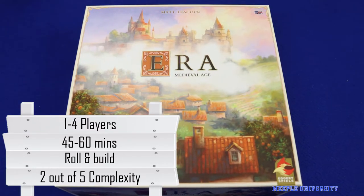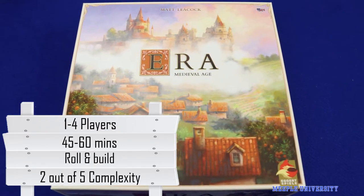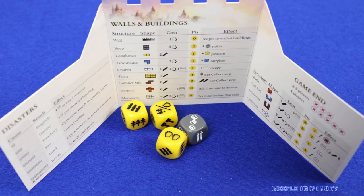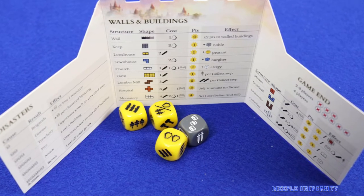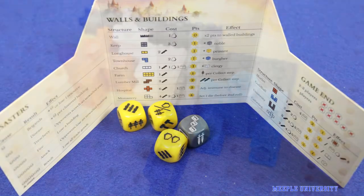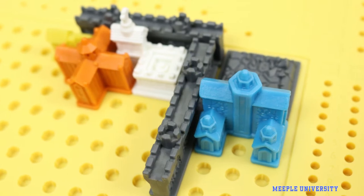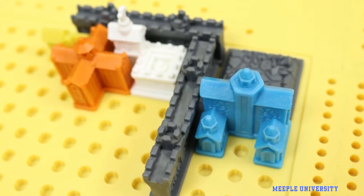Released in 2019, Era Medieval Age is a dice-driven city-building game in which players try to construct the best medieval village they can. It was designed by Matt Leacock and published by Eggertspiele and Plan B Games.